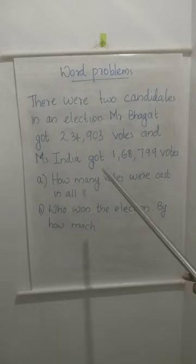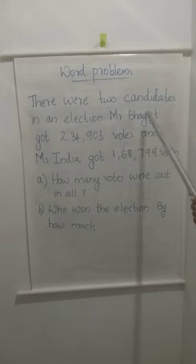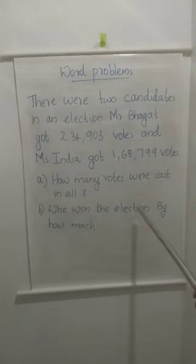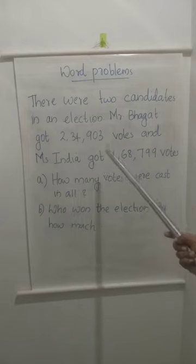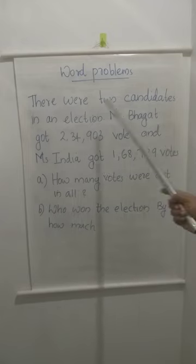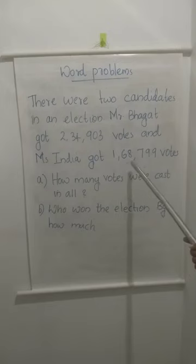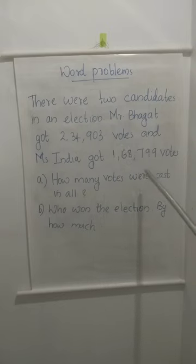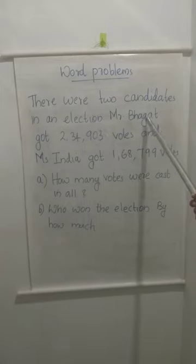Yes, by adding. Adding the total number of votes for Mr. Bhagat and Miss India will give the total number of votes. Now the next question: who won the election? For that we have to compare the two numbers of votes. Mr. Bhagat got 2,34,903 and Miss India got 1,68,799. Both are six-digit numbers, and by looking at the numbers we can say 2,34,903 is larger. So Mr. Bhagat won the election.